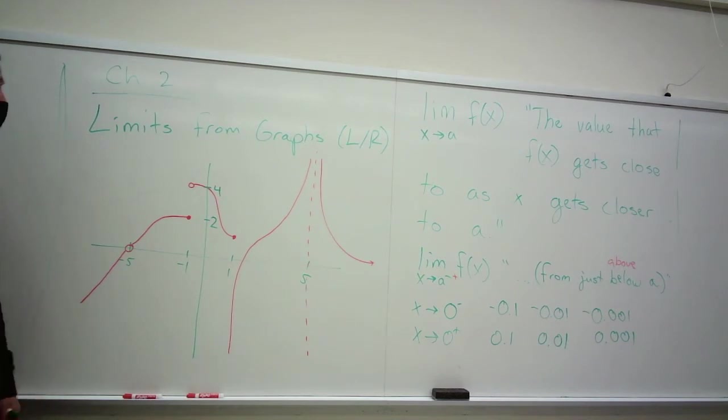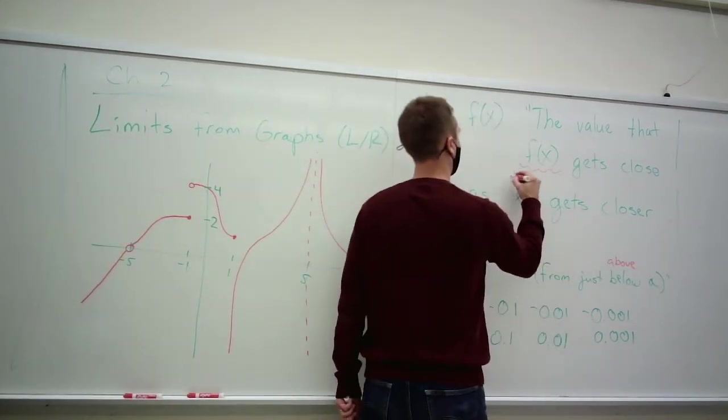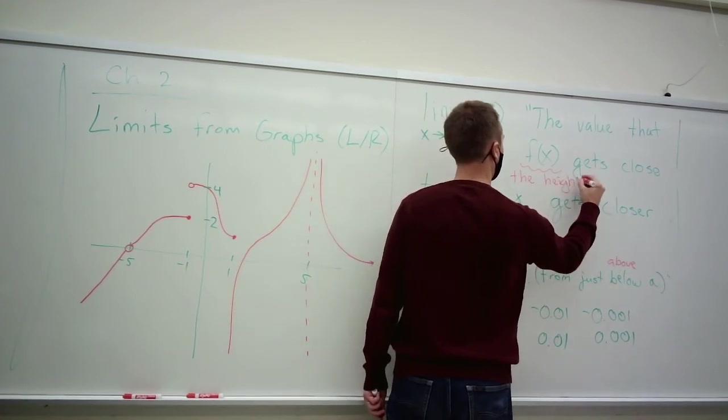So just as a general review of what a limit is there. So what does that look like on a graph?